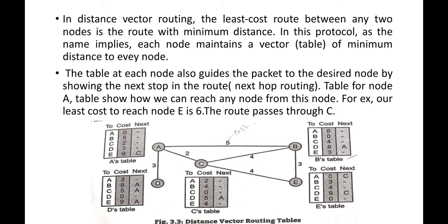In the routing table, if there is no immediate neighbor for a destination, we record the mediator router in the third column. For example, if going E to A through C, we write C as the mediator. The table has columns for destination, cost, and the next-hop mediator router through which we reach that destination.